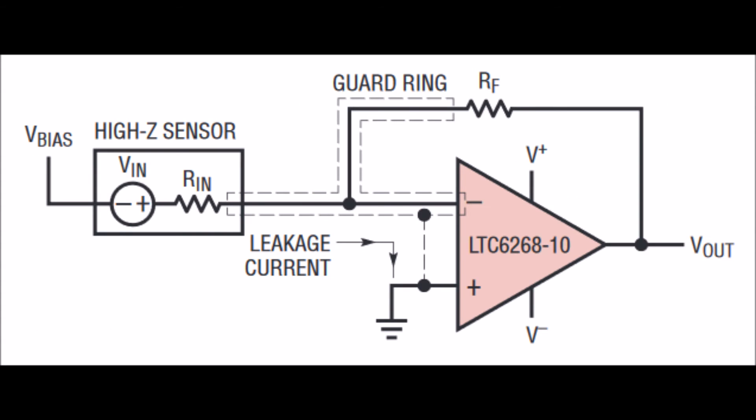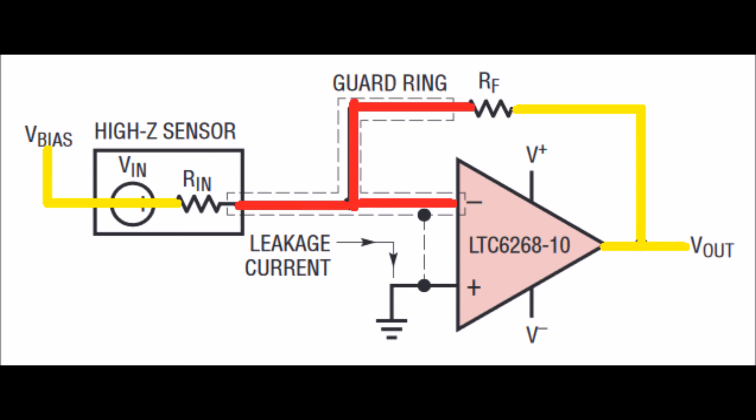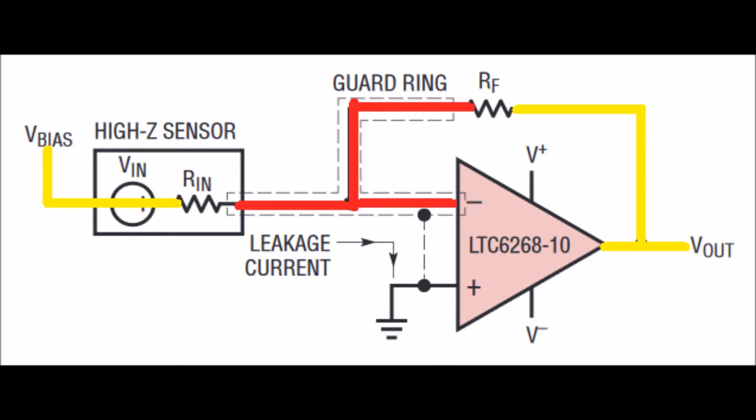This does make pretty good sense intuitively. The output of an op amp has a wide output voltage swing, so it doesn't need protection as much, and the input side is buffered by the resistor. So guarding that point where the input resistor and the feedback resistor come together into the op amp makes good sense. So it looks like we're going to have to take another stab at the layout and try to move those resistors closer and band them.